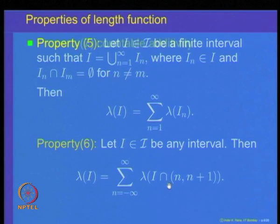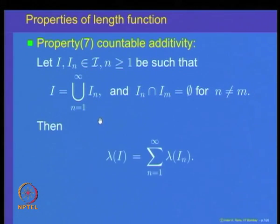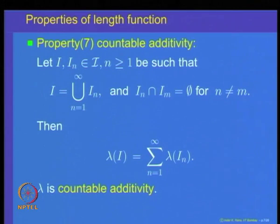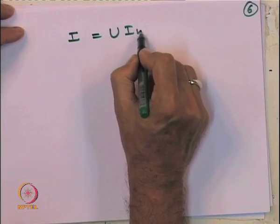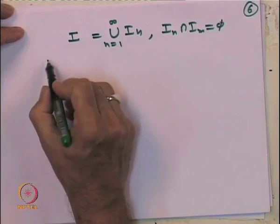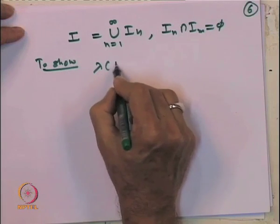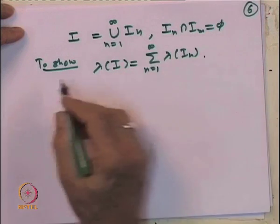We will now use sigma-finiteness to prove the countable additivity property of the length function: if an interval I is written as a countable disjoint union of intervals I_n, then length of I equals summation of length of I_n. To prove this, let I be written as the union of I_n for n equal to 1 to infinity, where I_n intersection I_m is empty. We want to show length of I equals summation length of I_n.